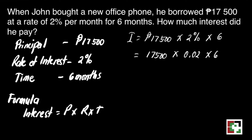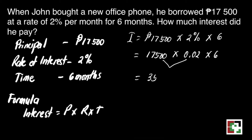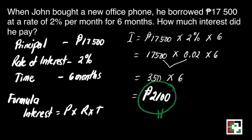We're ready to multiply 17,500 and 0.02. In order for us to get the product, we will just multiply it to 6 because we have 6 months. That's 350 pesos times 6, which will give us 2,100 pesos. That is our final answer — the amount that John will have to pay after borrowing 17,500 pesos.